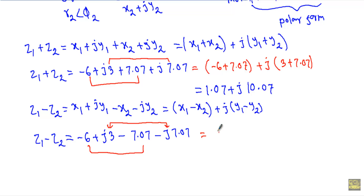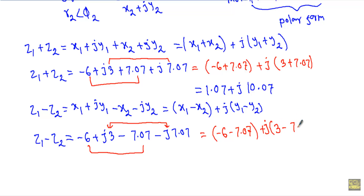Here I get minus 6 minus 7.07, and taking j common I get j into (3 minus 7.07). Therefore the result is minus 13.07 minus j4.07.